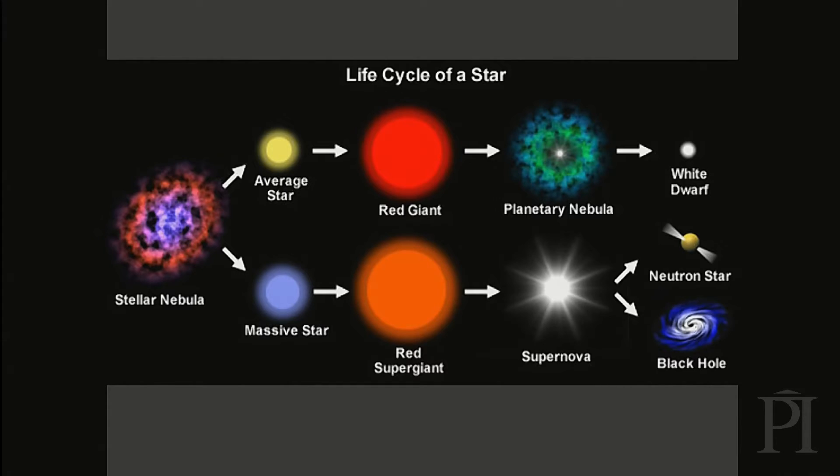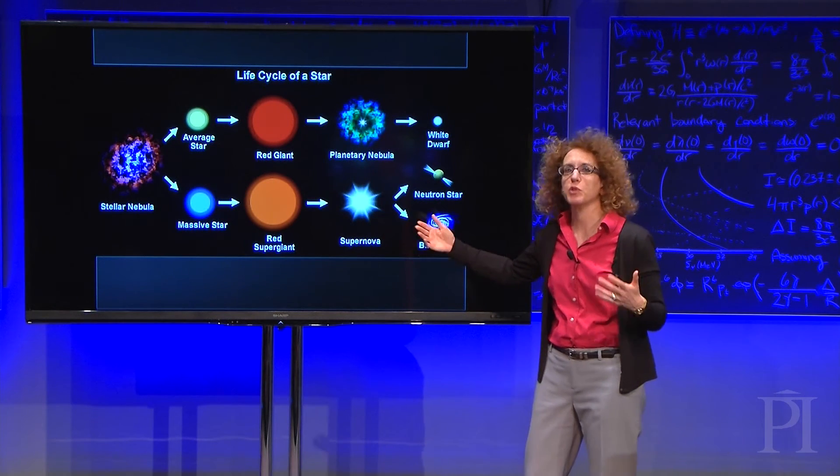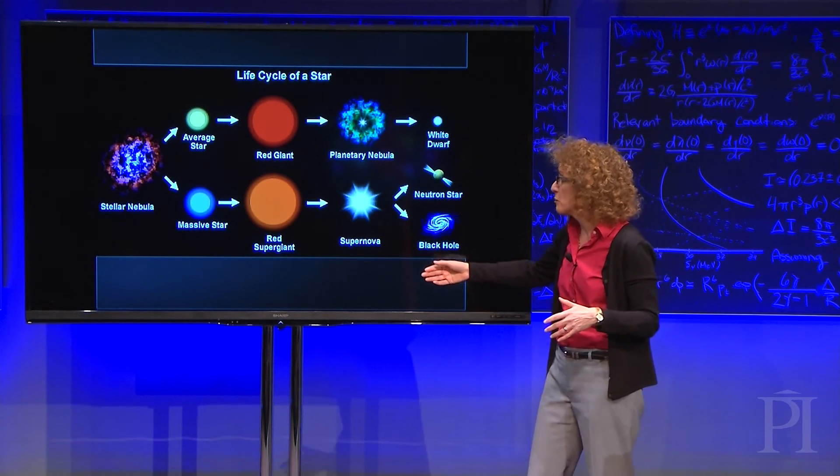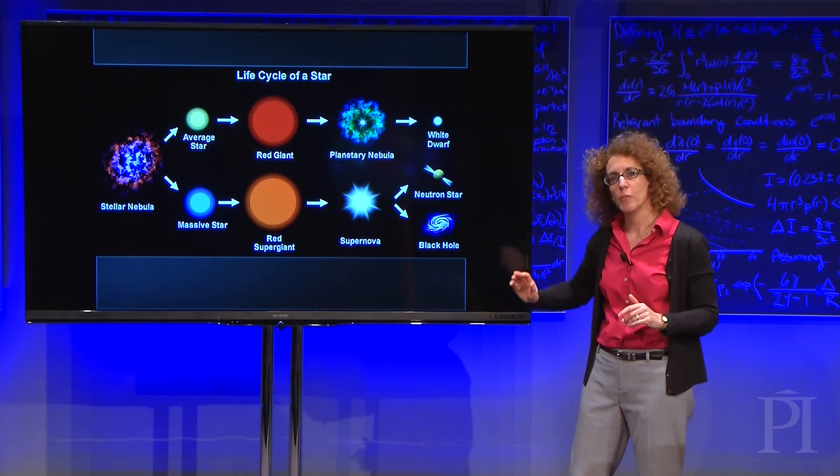Stars considerably more massive than the Sun will also evolve and turn into red supergiants, but will undergo a much more explosive finale—a supernova explosion—the result of which is one of two possibilities.